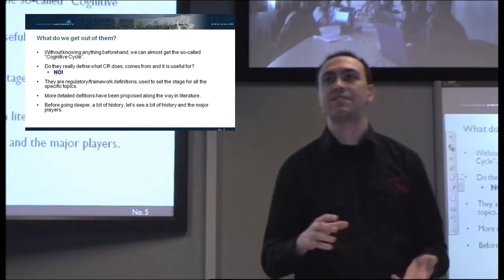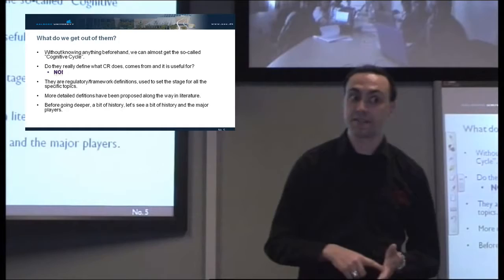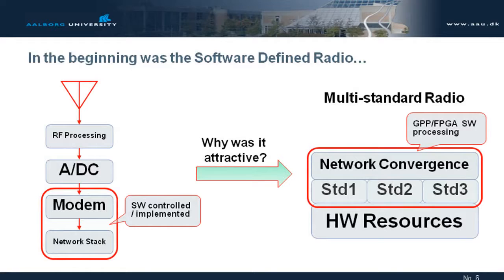Before going into specific definitions, let's have a bit of history on why cognitive radio was born. Because without knowing the history, we are lost. The beginning was the software-defined radio. What is software-defined radio? It's basically something where we have RF processing, we digitalize the signal, and then we have a modem and the network stack which is everything software-controlled or software-implemented — a software modem or software controller that tweaks the parameters of the radio.